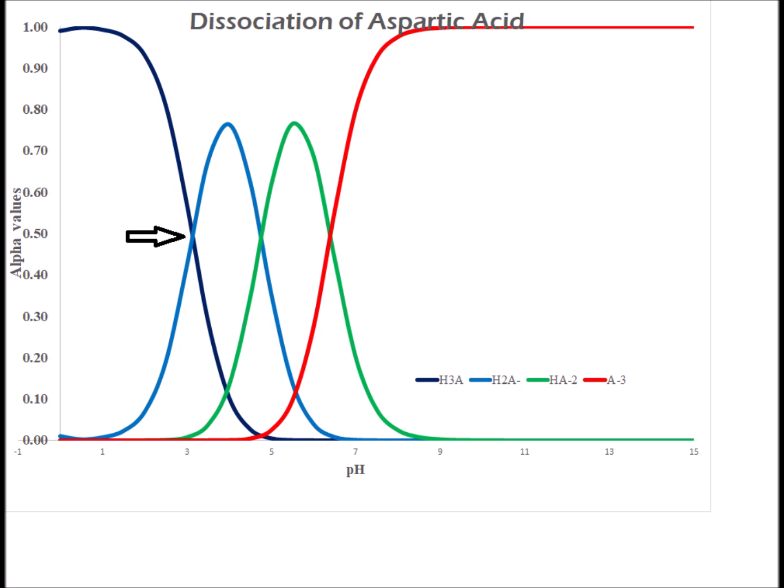Here we see at the arrow the crossover between the plus one ion form of aspartic acid, which is fully protonated, and the zwitterion or zero charge form — where the black and blue lines overlap. It occurs at a pH of roughly 1.95, because that is the pKa of Ka1 for aspartic acid. The crossover between the zwitterion form and the monoanion, the minus one charge form, occurs at a pH around 3.71, because the pKa of Ka2 for aspartic acid is 3.71.